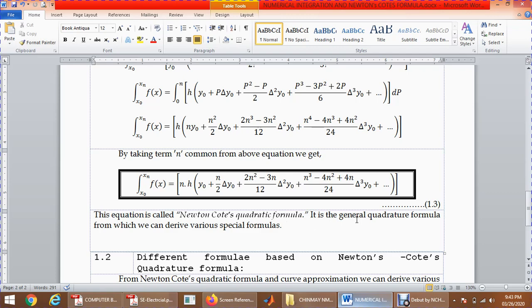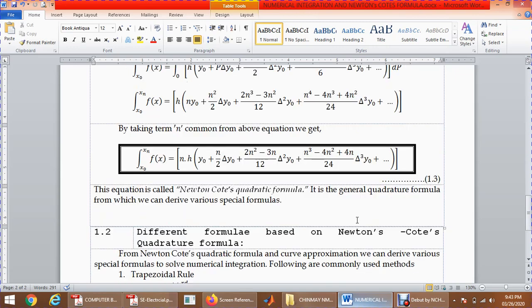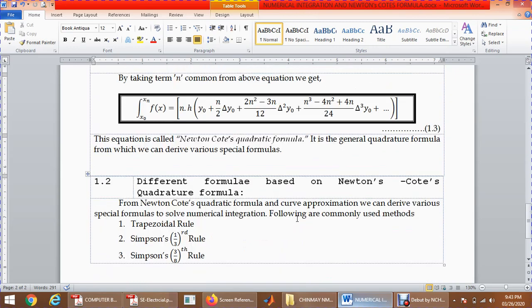Based on this formula, there are three methods commonly used for numerical integration: first is trapezoidal rule, second is Simpson's one-third rule, third is Simpson's three-eighths rule. In the next video, we are going to discuss trapezoidal rule, its theory, how to solve a problem, and one problem. Thank you for watching this video.